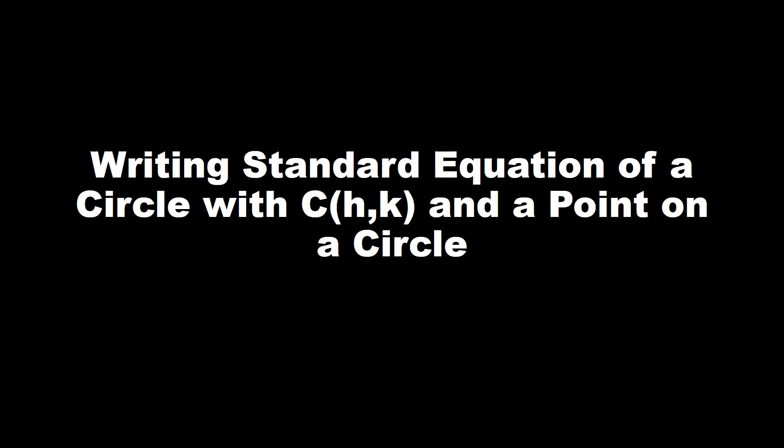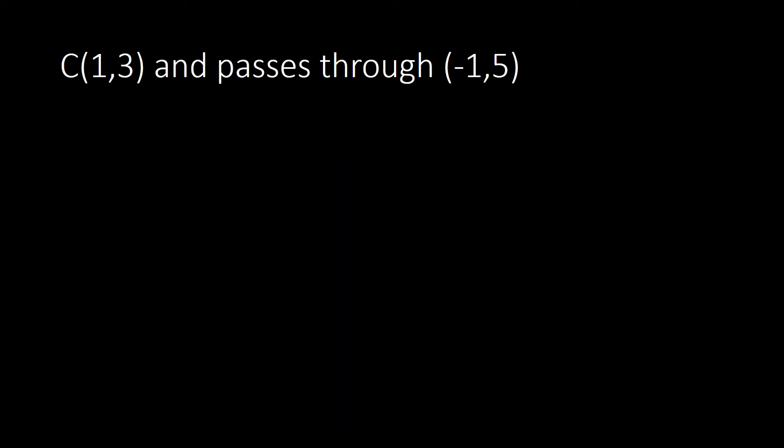Let us know how to write the standard equation of a circle with center (h, k) and a point on the circle. So let us have this given first: the center is at (1, 3) and the circle passes through the point (-1, 5). So how do we write our standard equation of the circle for this?